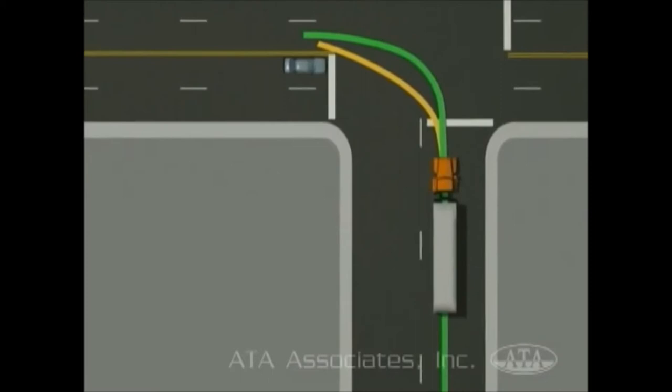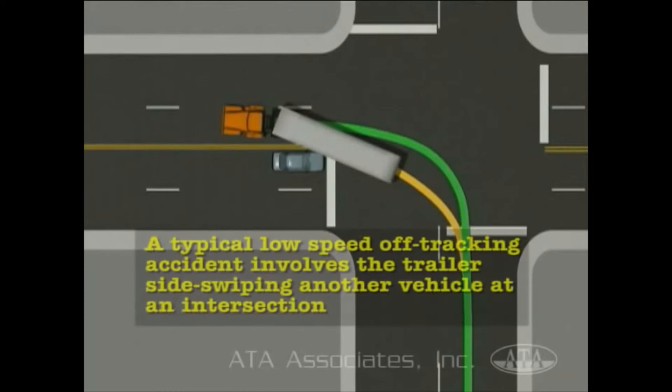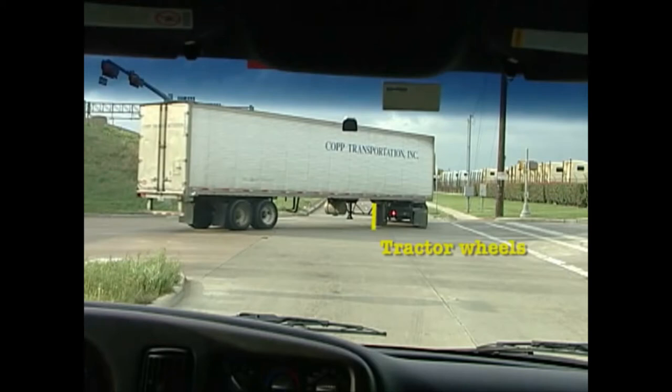Off-tracking is a characteristic that is common to all vehicles, although it is more pronounced with larger vehicles, in which the rear wheels do not follow precisely the same path as the front wheels when the vehicle makes a turn on a horizontal curve.